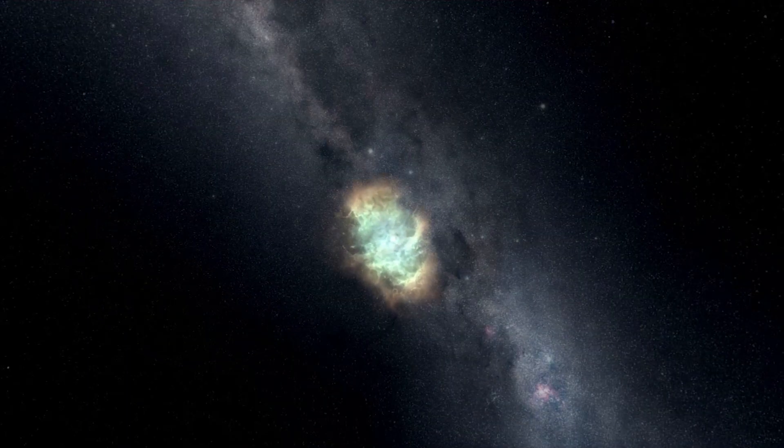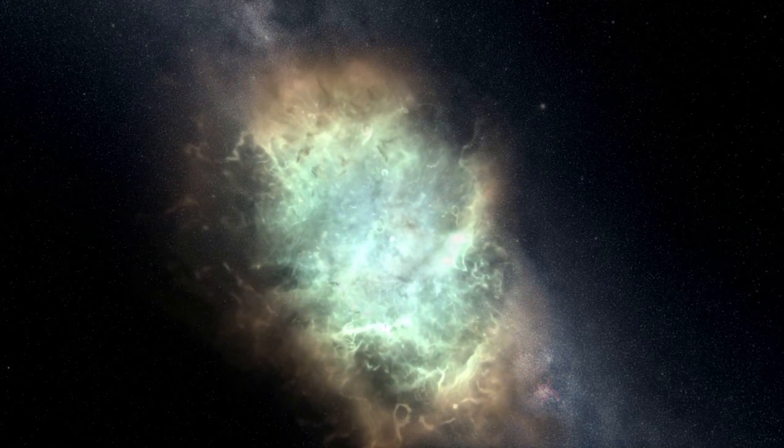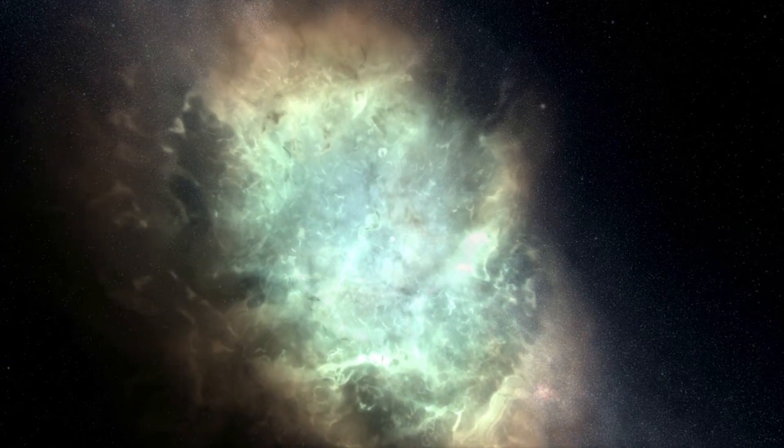Our Sun will go through the same phase when it loses its outer shell and becomes a crystallized star, a white dwarf.